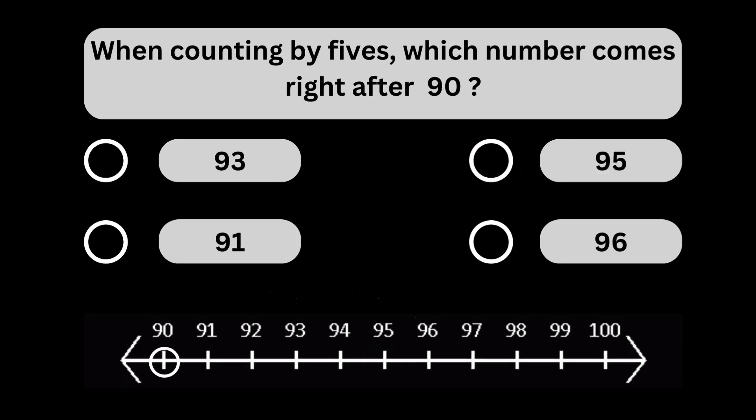When counting by fives, which number comes right after 90? When counting by fives, the number 95 comes right after 90.